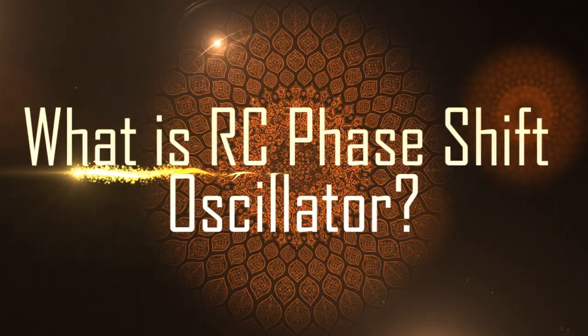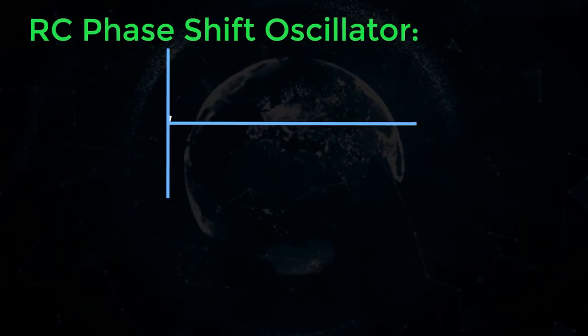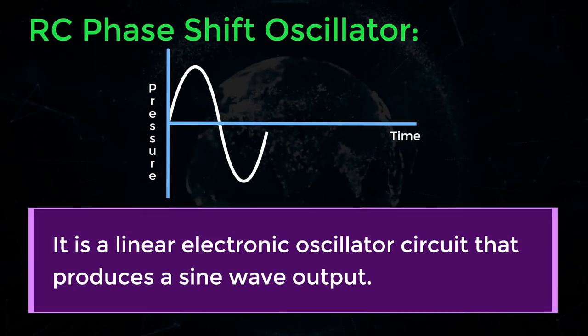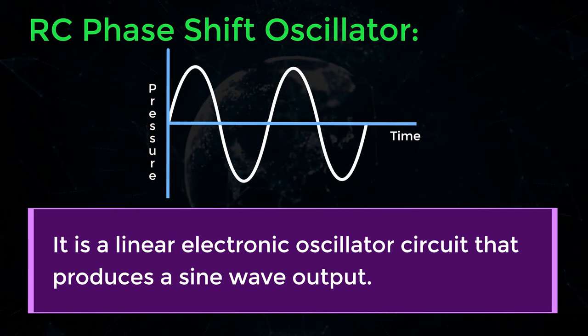What is RC phase shift oscillator? RC phase shift oscillator. It is a linear electronic oscillator circuit that produces a sine wave output.